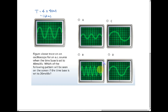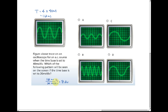Now let's check the remaining options. The time base is set to 20 milliseconds per division. If the period is 160 milliseconds, then 160 milliseconds divided by 20 milliseconds per division equals eight divisions. So we need the option where one complete oscillation spans eight divisions.